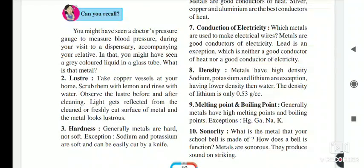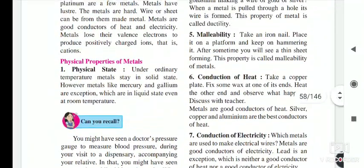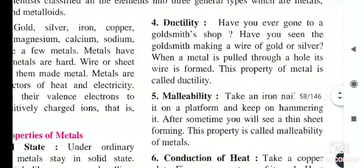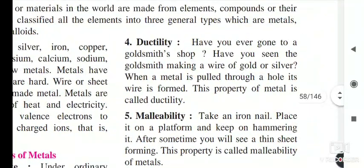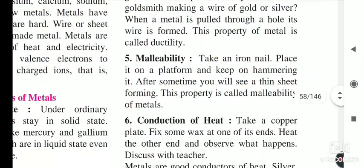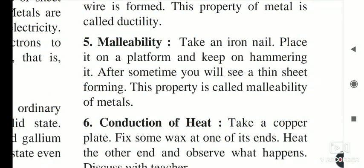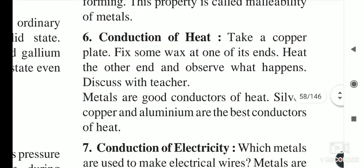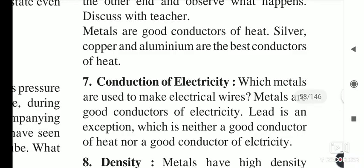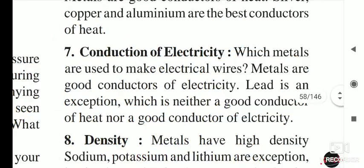Metals are hard. Metals are ductile, meaning we can draw wire from them. Metals are malleable, meaning we can make sheets from them. Metals are good conductors of heat, which is why we use metal utensils for cooking food. Metals are also good conductors of electricity — aluminium and copper are used for wiring.